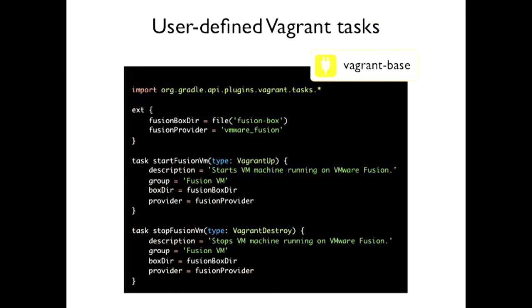If you don't want to use the convention tasks and want to create your own, you can fall back to the base plugin. In this case we create our own task names in the context of Vagrant. We want to use VMware Fusion as the provider instead of VirtualBox. We give it specific descriptions and a group, point it to a specific box directory, and can stop and start it. Up top you can see extra properties defined in the build script — we point to the actual provider name, which can be looked up in Vagrant's own configuration.